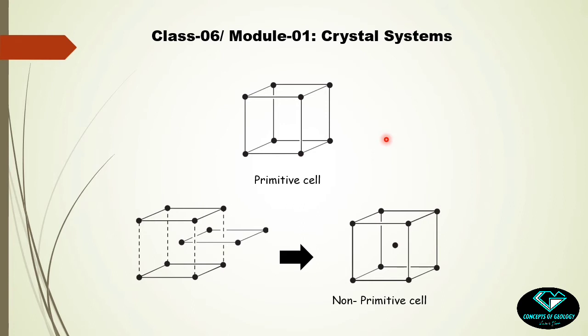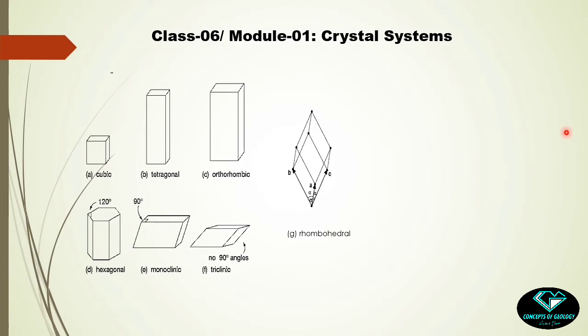Very interestingly, whatever the arrangement of the motifs in three-dimension is, whatever the unit cell may be, one thing you may take almost as a thumb rule: that the shape of the unit cell will be one of these basic unit cell shapes. I mean these six basic unit cell shapes we have discussed in the last class.